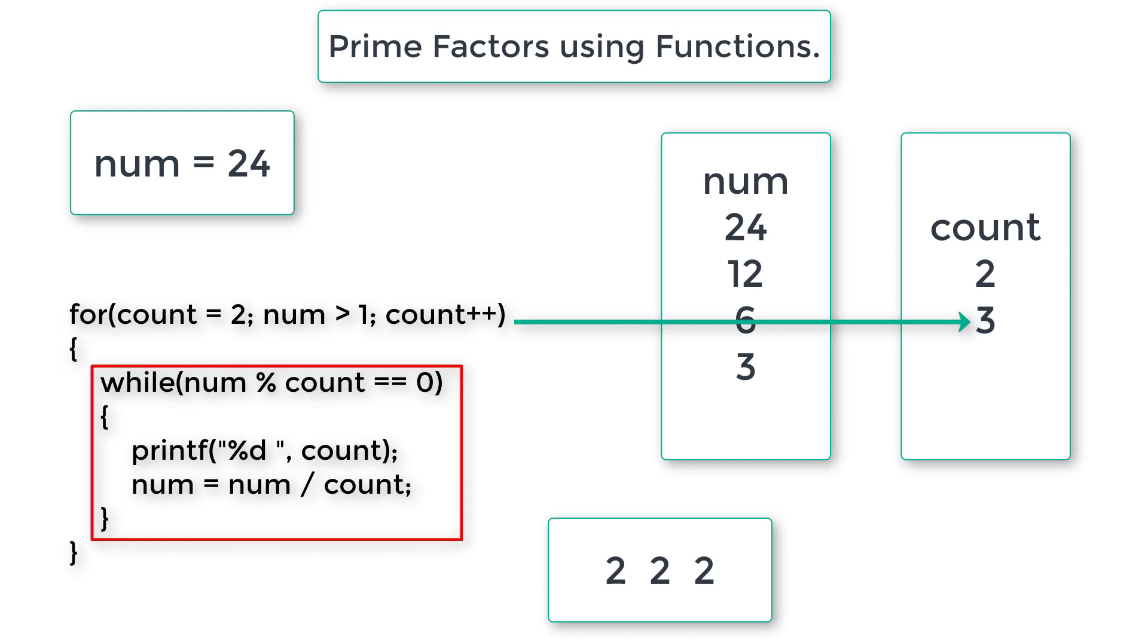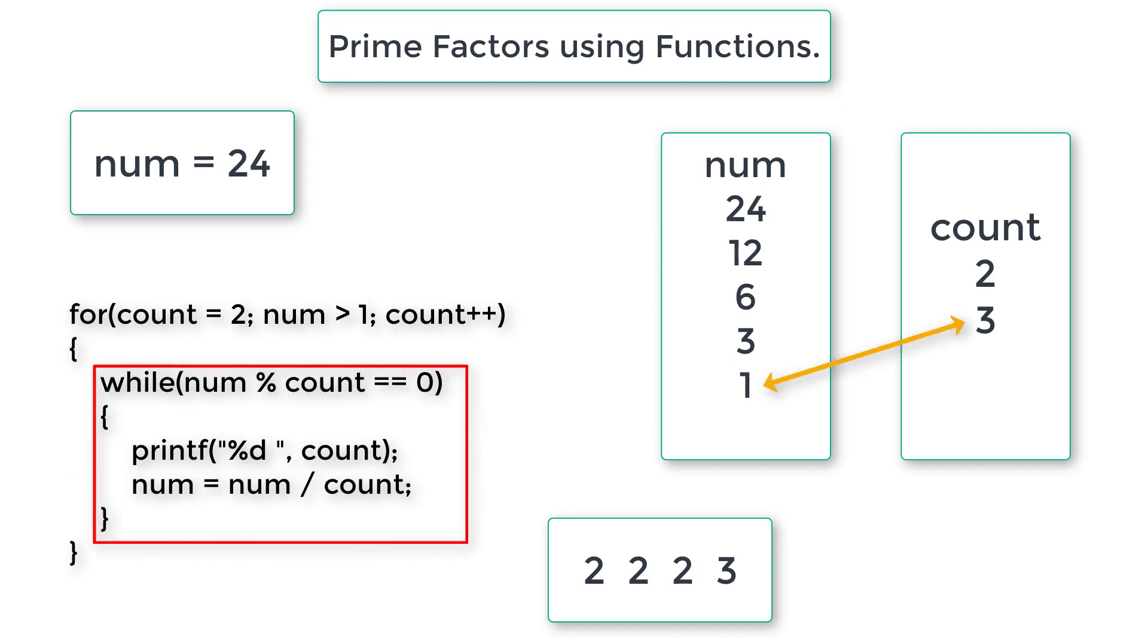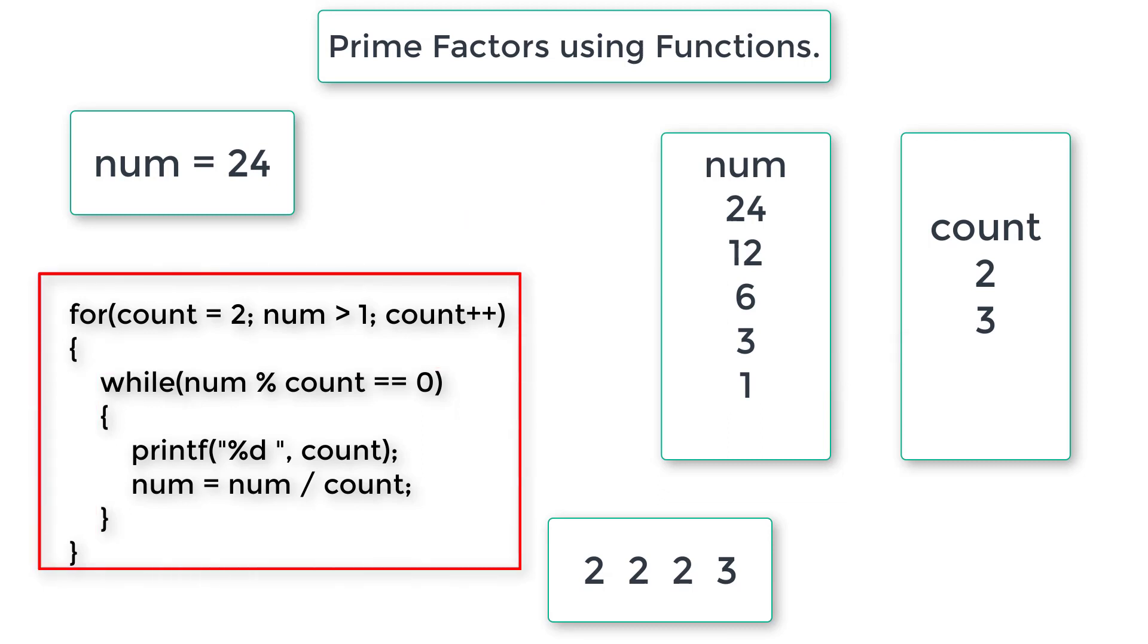So while loop, num is 3, modulo divide by 3, yes it is possible. So print 3 now, divide num by count. So 3 divided by 3 is 1. Now while loop, num is 1, count is 3. 1 modulo division 3 is not equal to 0. So exit while loop, check for loop now. The condition num is greater than 1 which is false. So exit this for loop.